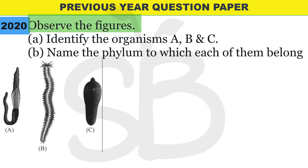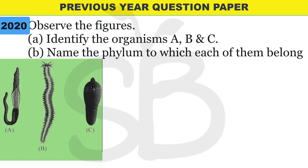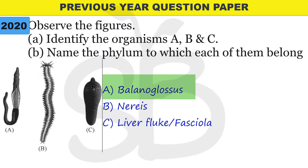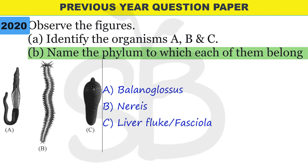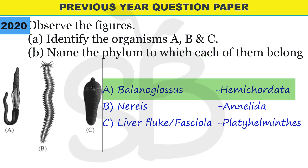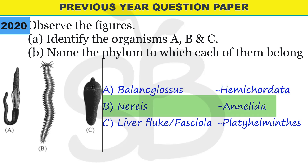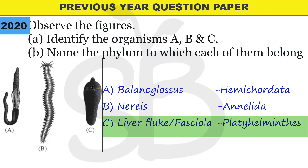Next question from 2020: observe the figure and identify organism A, B, and C. A is Balanoglossus, B is Nereis, and C is Liver fluke (Fasciola). Part B asks to name the phylum to which each belongs: Balanoglossus belongs to Hemichordata, Nereis belongs to Annelida, and Liver fluke (Fasciola) belongs to Platyhelminthes. In the animal kingdom textbook, all images are important.